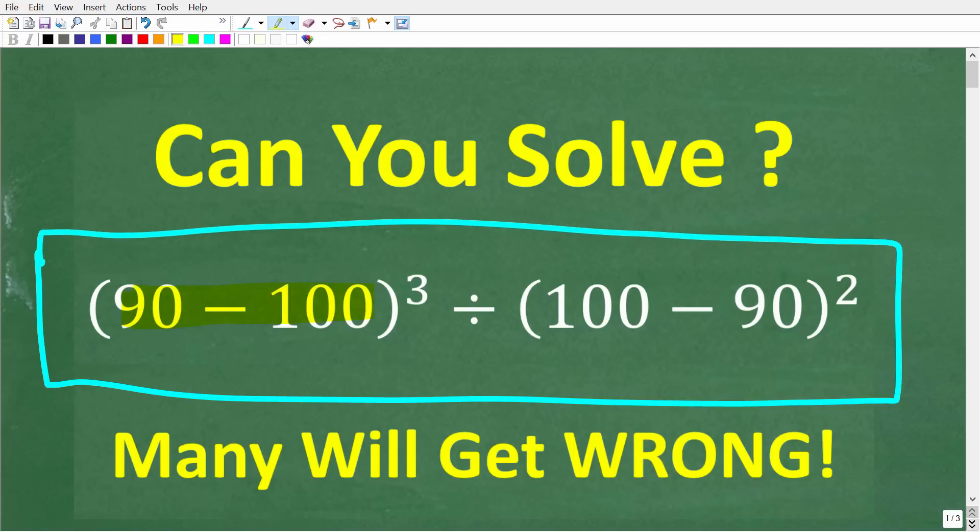We have 90 minus 100 in parentheses cubed divided by 100 minus 90 in parentheses squared. All right, so once again, no calculators, but if you think you know the answer, put that into the comment section.